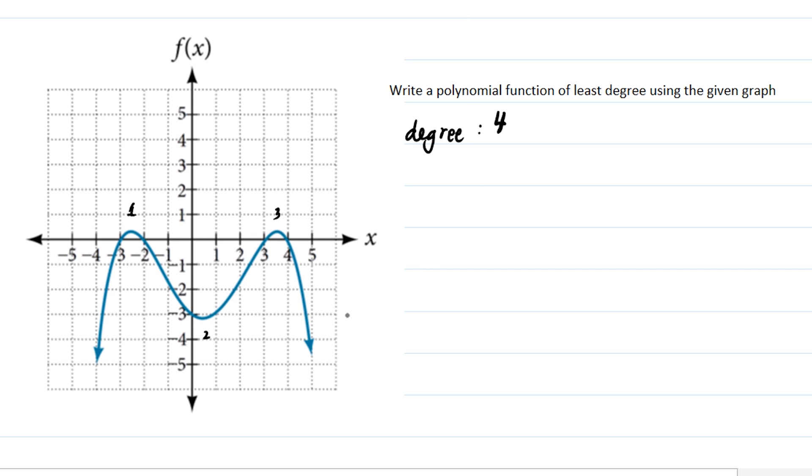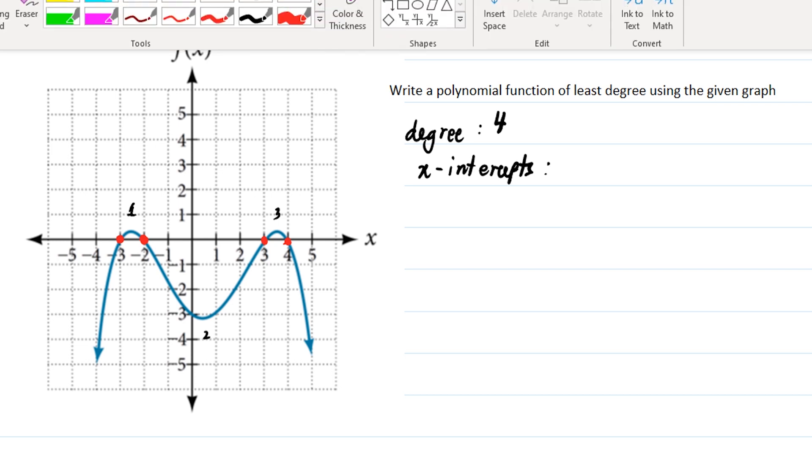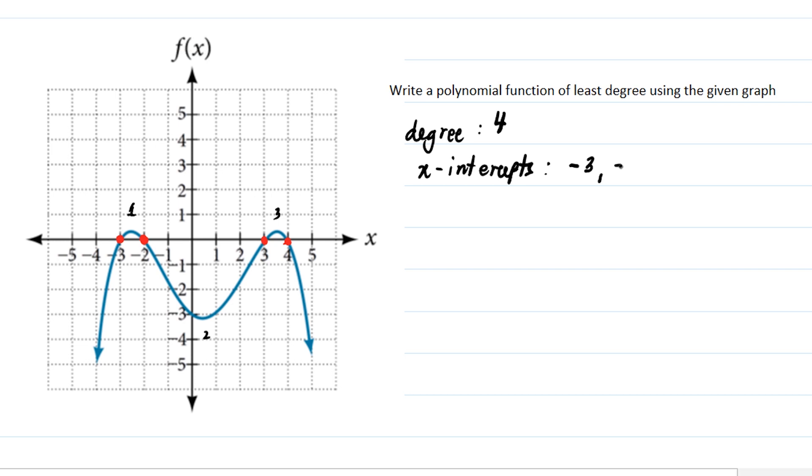The next thing you need to do is to look for the x-intercepts. The x-intercepts of this function, based on the graph, are negative three, negative two, three, and four. Now, let's look for the y-intercept. That will be very important later. For the y-intercept, we have negative three.